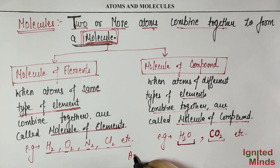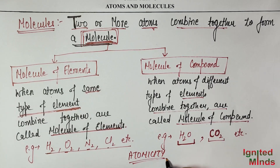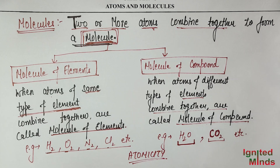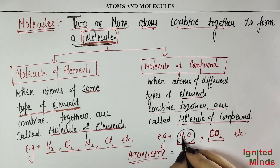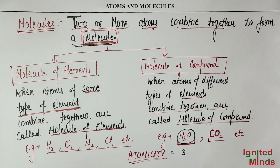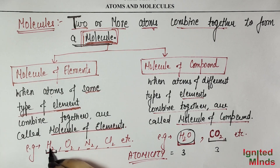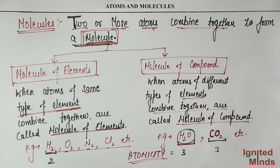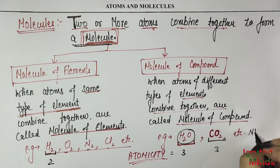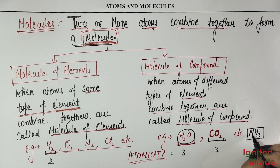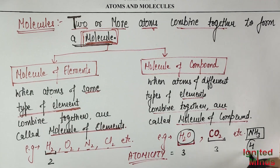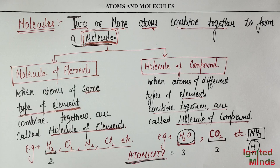Here is an important term: Atomicity. Atomicity means how many atoms are present inside one molecule. For H₂O, there are 2 hydrogen and 1 oxygen atoms, so atomicity is 3. For CO₂, there is 1 carbon and 2 oxygen atoms, so atomicity is also 3. For O₂, there are 2 atoms, so atomicity is 2. For ammonia NH₃, the formula has 1 nitrogen and 3 hydrogen atoms, so total is 1 plus 3 equals 4. The atomicity of ammonia is 4.